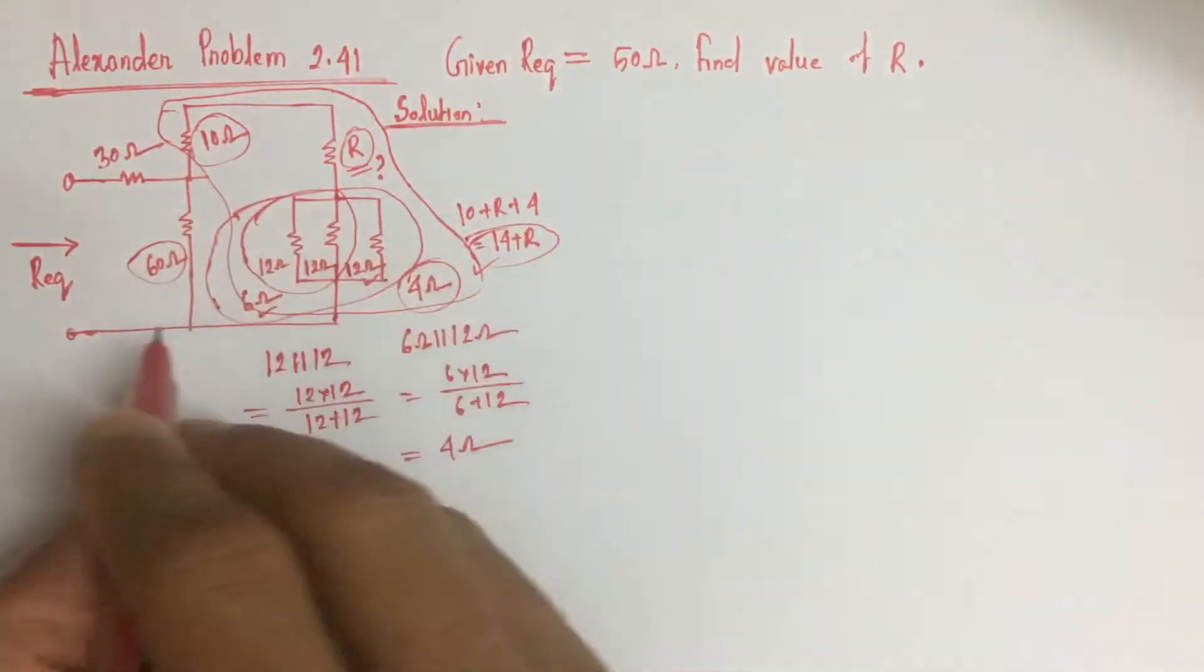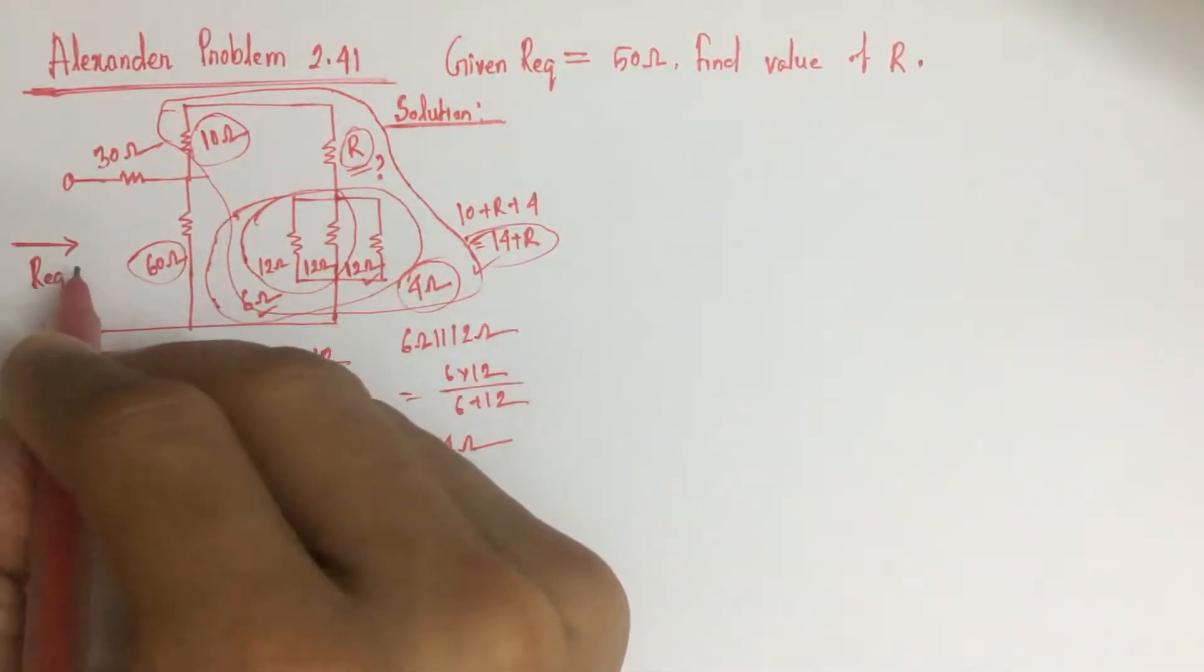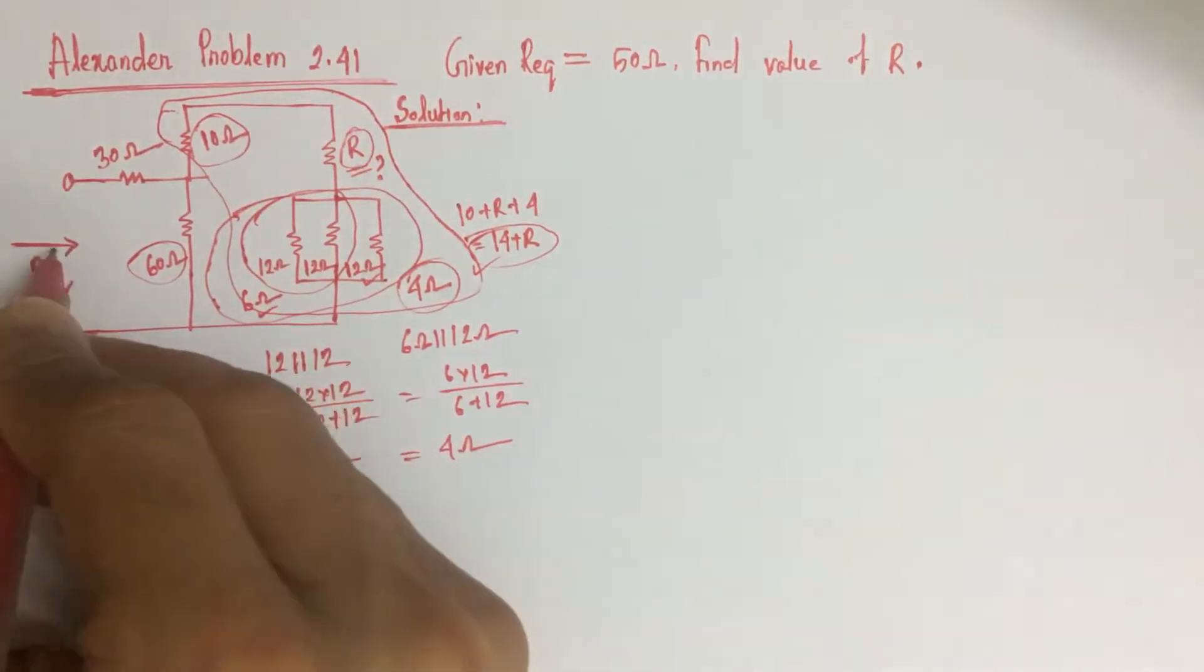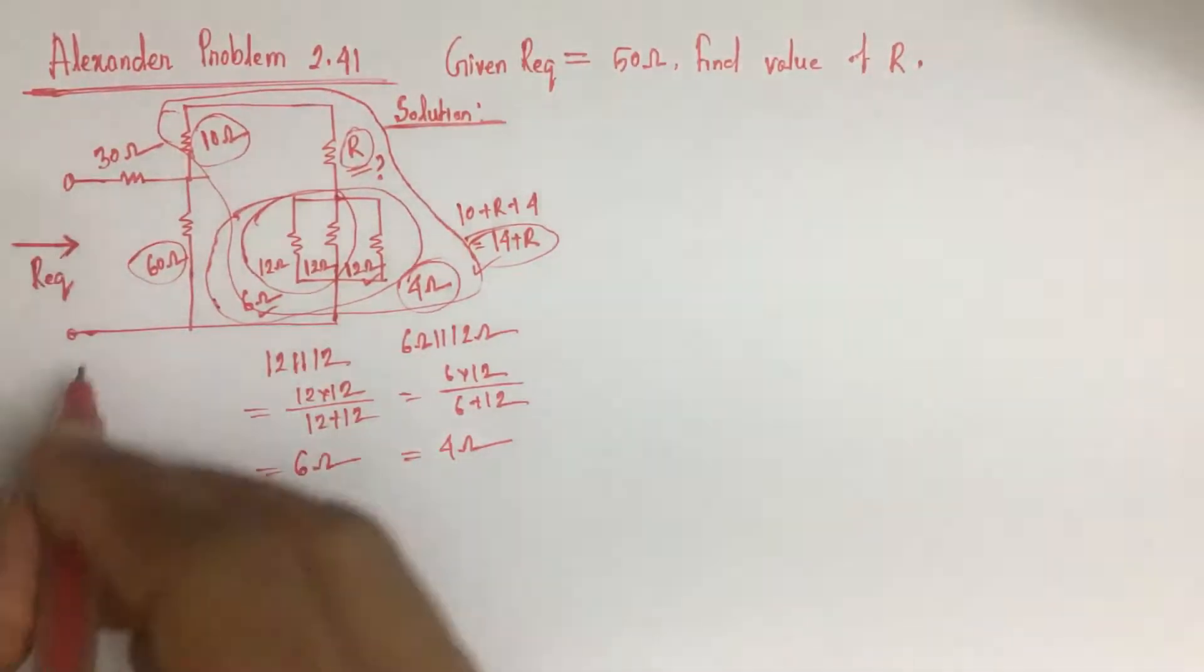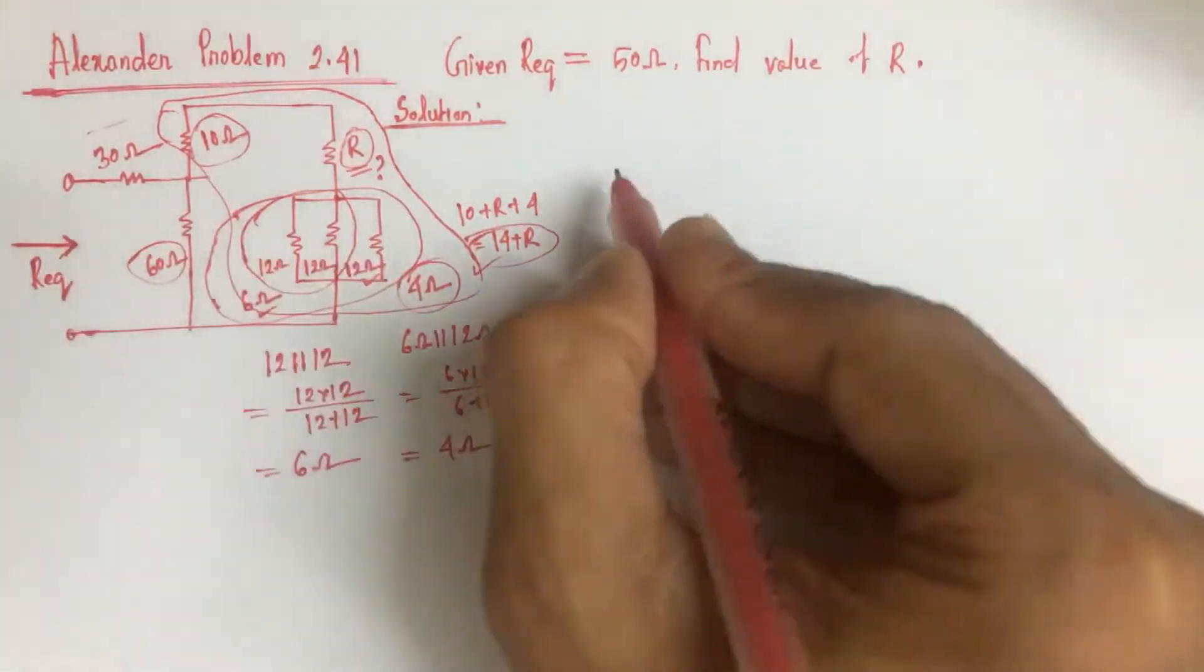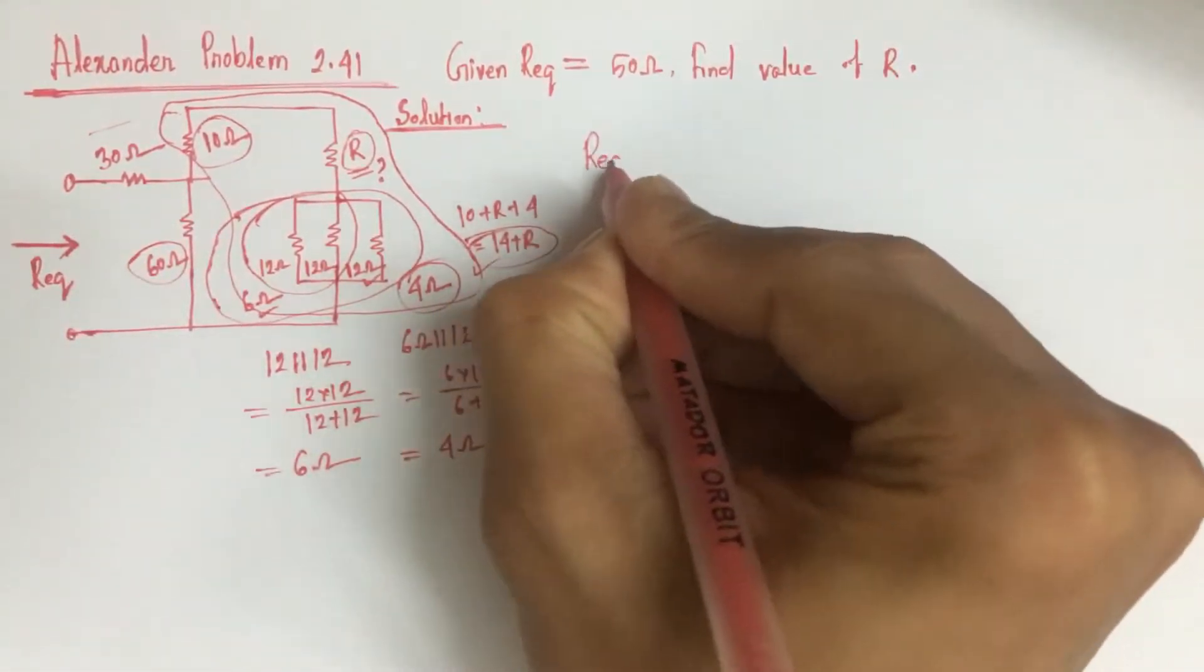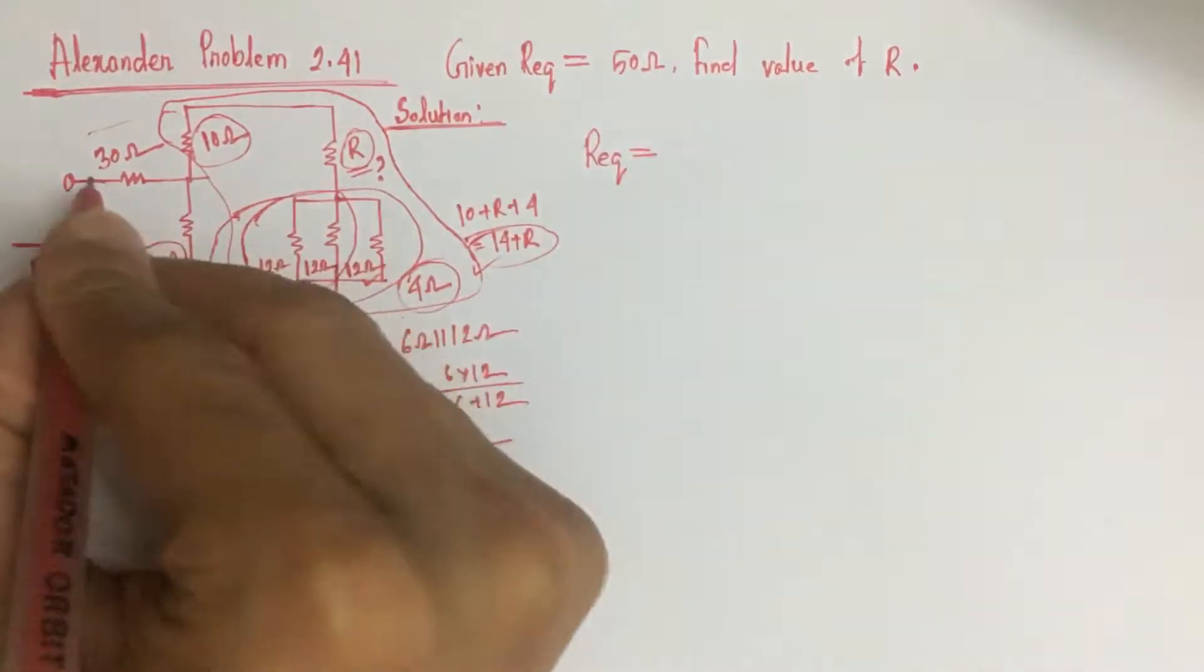If we make an equation for this whole circuit, then we will have R equivalent is equal to 30...